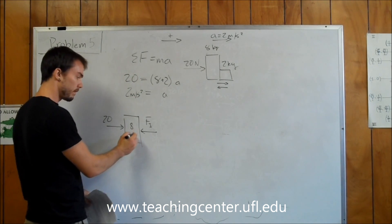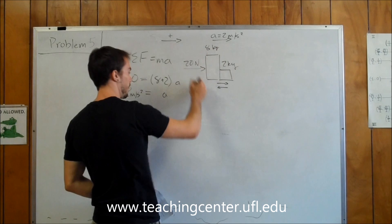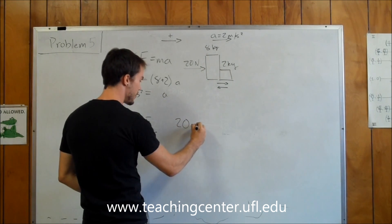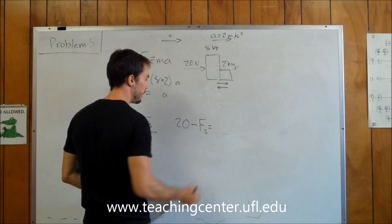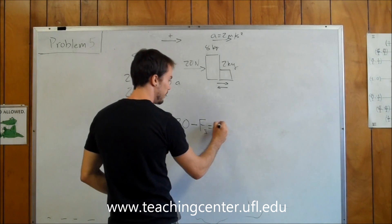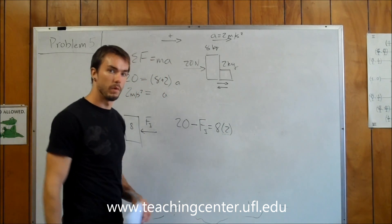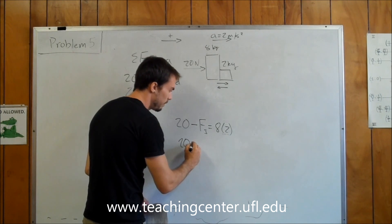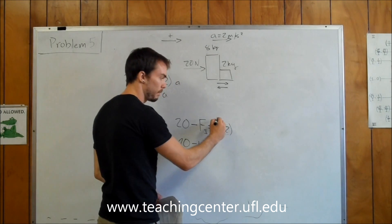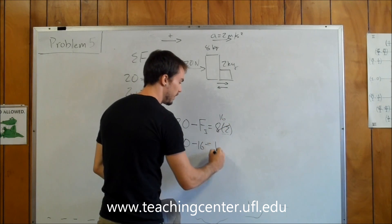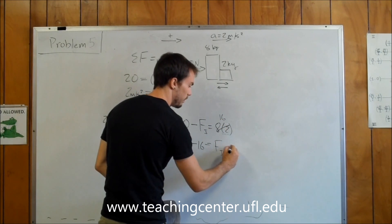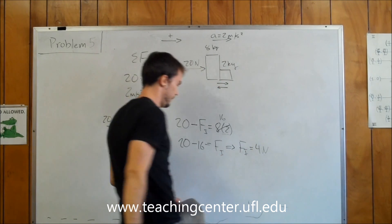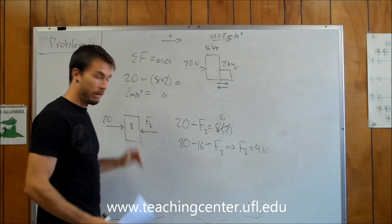So if this is the object we're looking at, we're isolating the 8-kilogram, then we're going to say that the sum of the forces is going to be 20 minus our internal force is going to be equal to our mass of 8 times our acceleration of 2, which is going to be positive because it points towards the right. So what we're going to end up saying is 20 minus 16, 8 times 2, is going to be equal to our internal force, or just quite simply, our internal force is going to be equal to 4 newtons. So that's the first way to look at it.